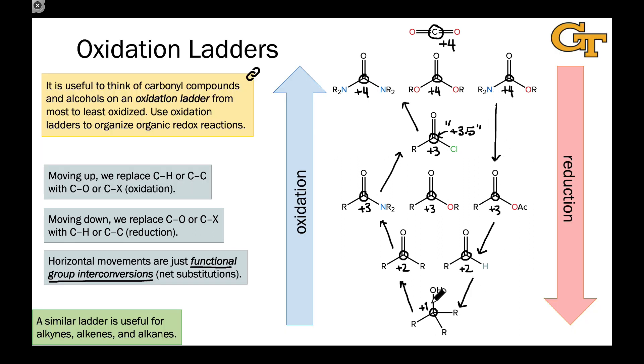We'll learn reagents for accomplishing these various transformations in these videos and for many of the functional group interconversions in a later video series. But thinking about all of these in terms of an oxidation ladder will help organize your thoughts moving forward. So keep this in mind as we look at specific conditions. If you want to build a map of many of the reactions we'll see over the next several lessons, start with an oxidation ladder.